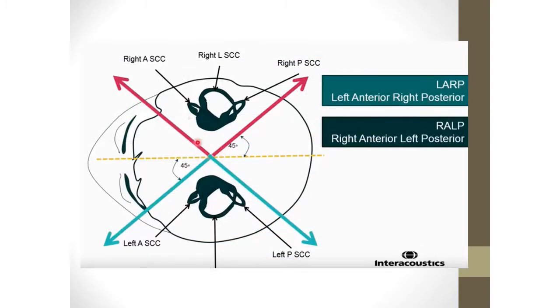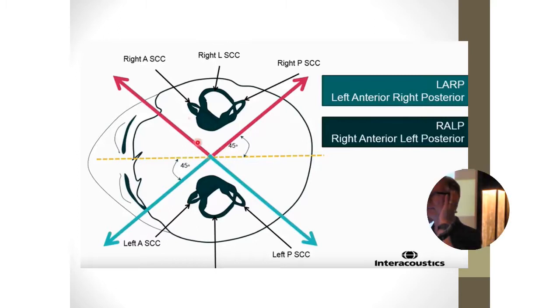And so the way you end up testing all six semicircular canals is you do one that's lateral. In other words, this is the lateral canals and this is on the horizontal plane. That's motions like this. And then you end up just turning the patient's head about 40 degrees to the side. And then you're going to be moving the head in the horizontal direction.